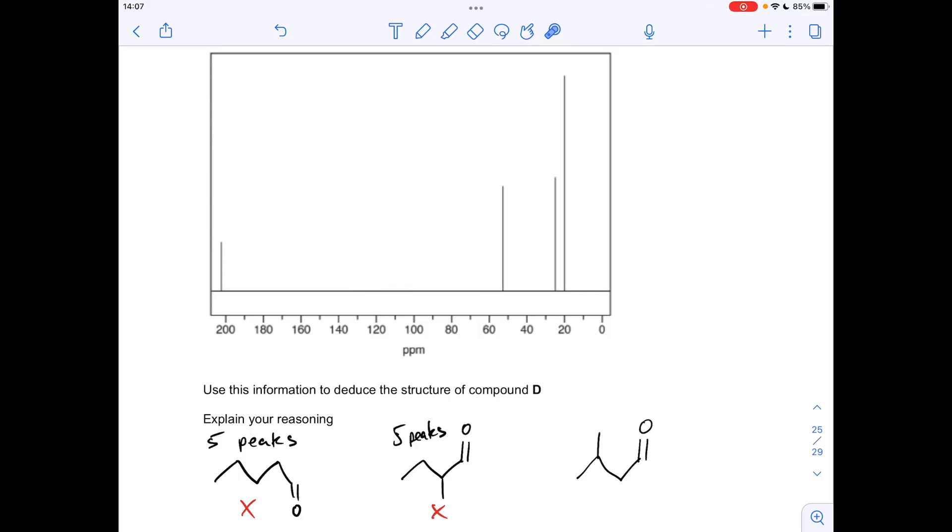So what if we put the methyl group on carbon number three now, so this is 3-methylbutanal. We've got one, two, three. They're equivalent now. So we've got four carbon environments. We get four peaks, so this is the answer.